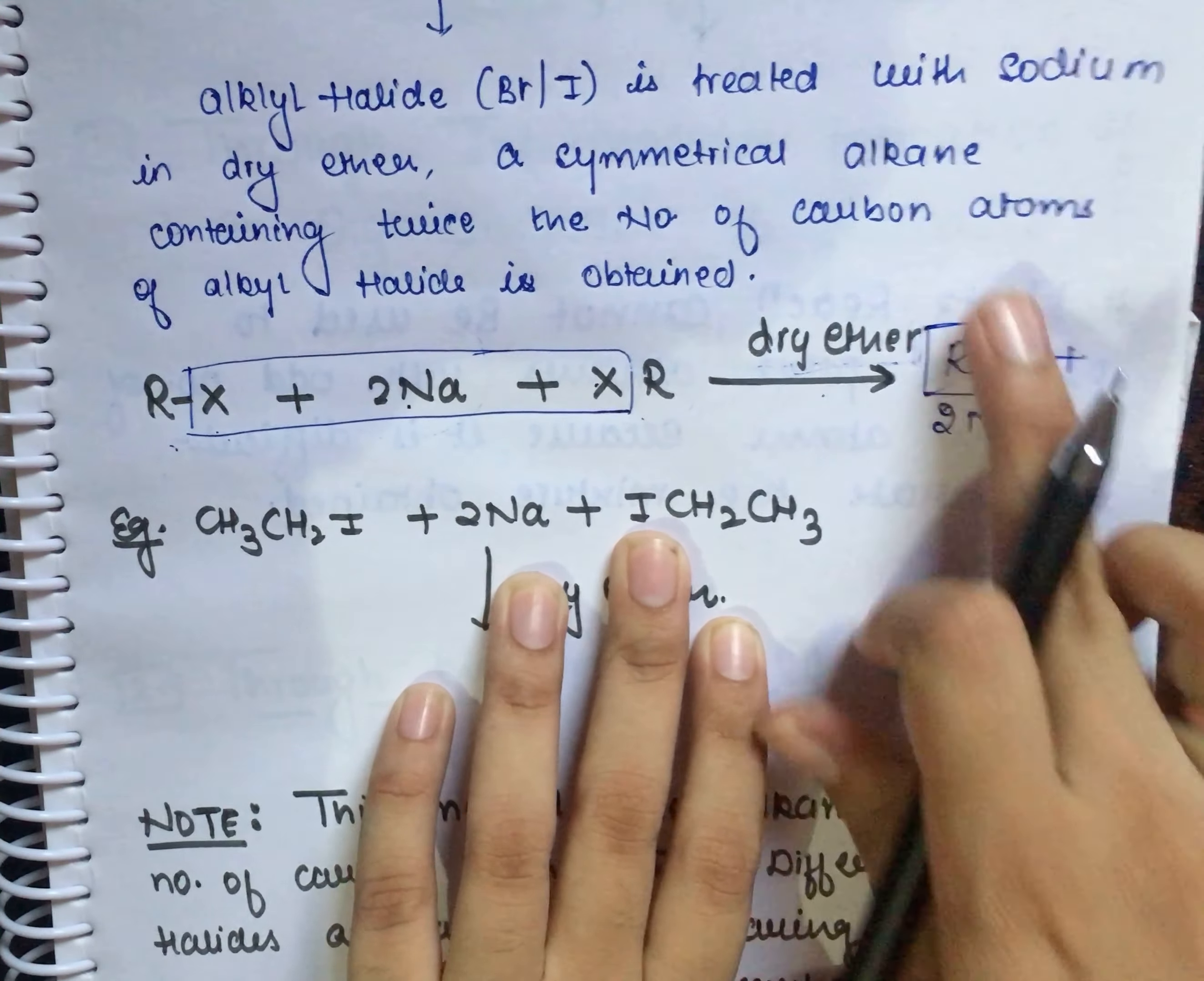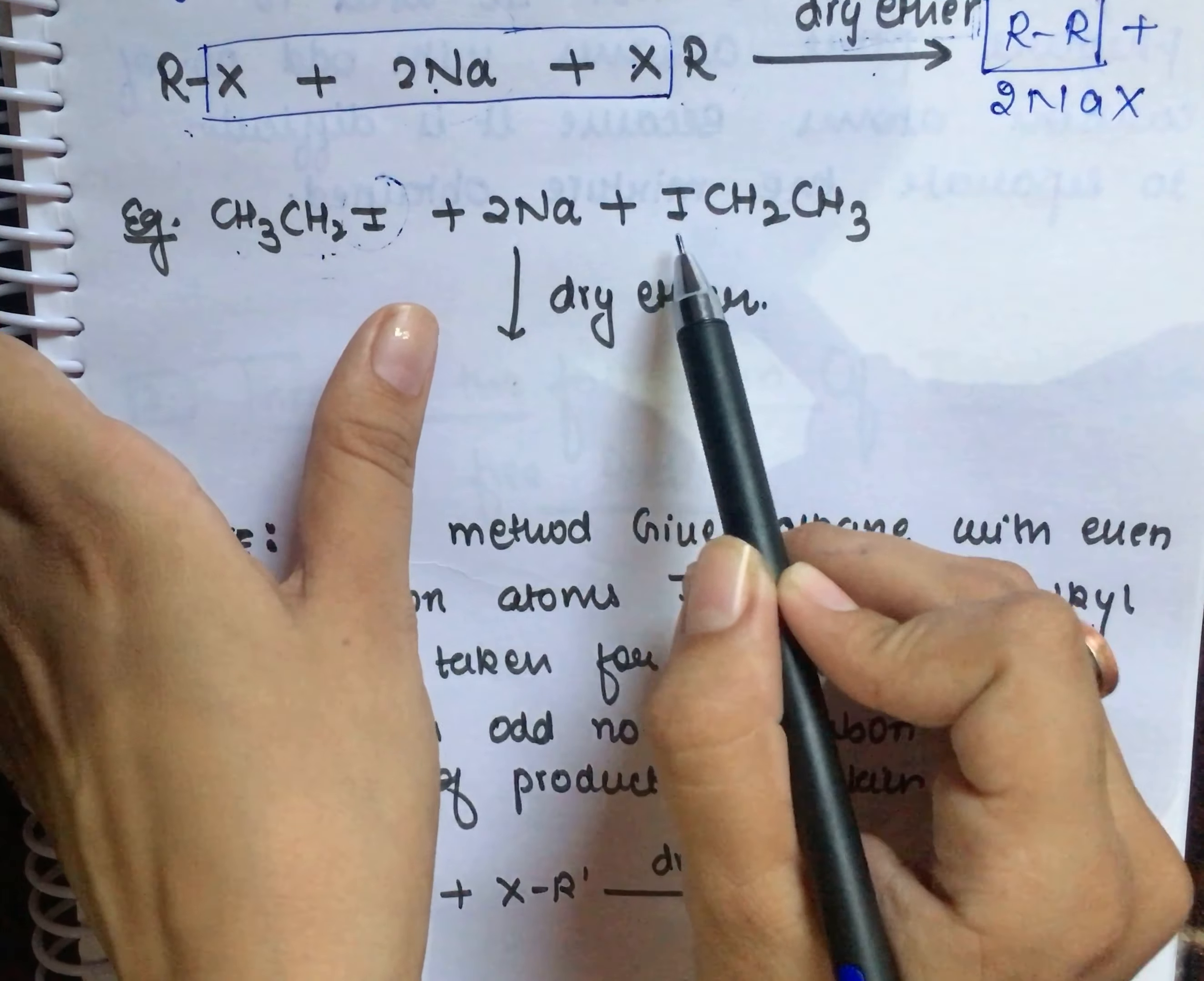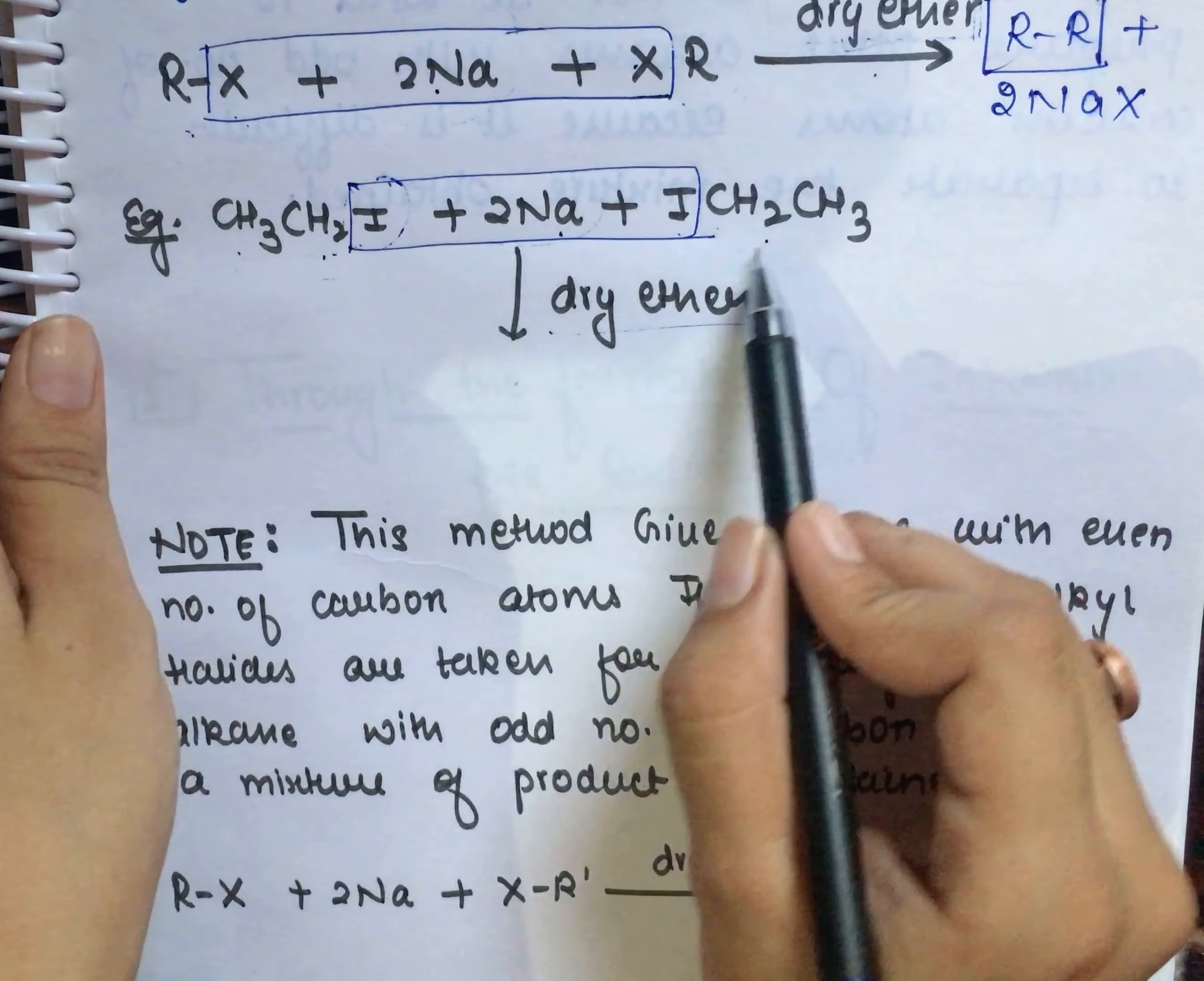It is a symmetrical alkane. Let's understand with an example. What is the alkyl halide? CH3CH2I - this is ethyl iodide. We treat it with sodium metal in the presence of dry ether. What we have to do here is remove these two moles of NaI and we will get the alkane.